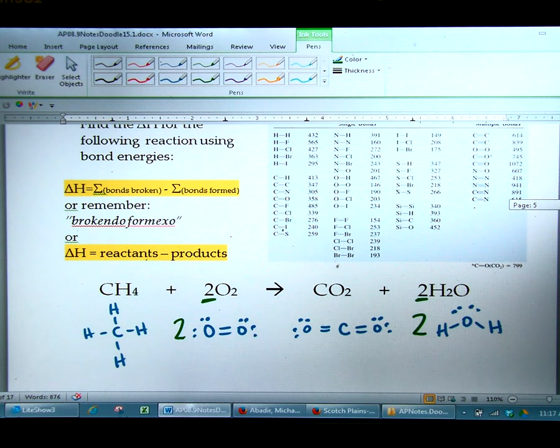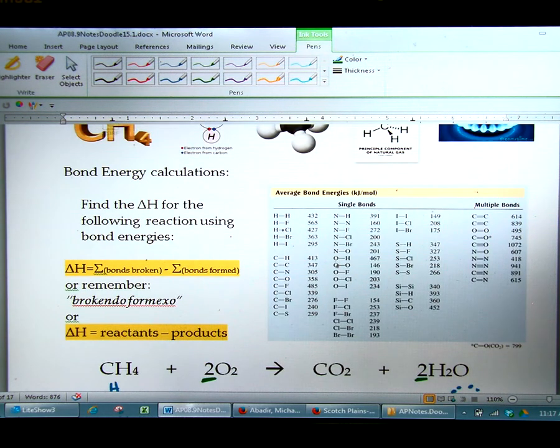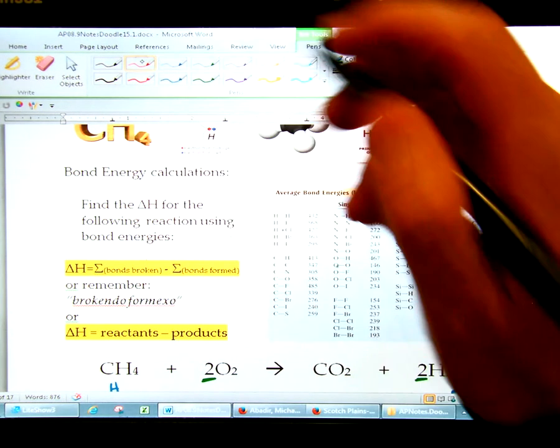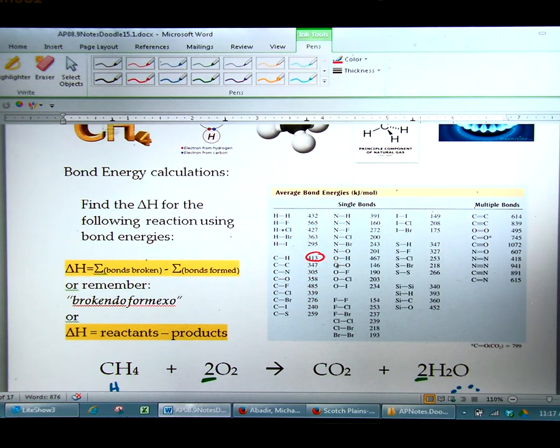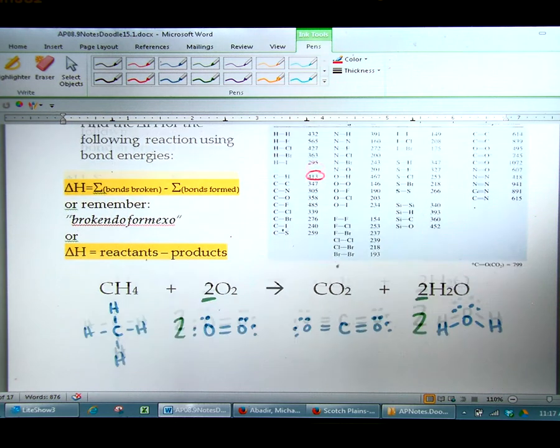So what we need to do is we need to look up how much energy is stored in each of these bonds. And you have this chart, which of course we would give you if we were to give you this on a test or quiz. So we're first going to look up the CH bond. The CH bond is right here, and it's 413 kilojoules. So look in our structure, and we have 413.